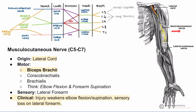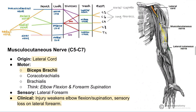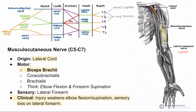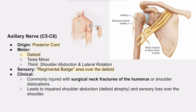First up, the musculocutaneous nerve. Remember its origin from the lateral cord. It innervates the muscles of the anterior compartment of the arm, most notably the biceps brachii. If you get a question about weakened elbow flexion or forearm supination, think musculocutaneous. The injury will also cause sensory loss on the lateral forearm. The axillary nerve is from the posterior cord and is a common injury site. Fractures of the surgical neck of the humerus or shoulder dislocations are classic causes. Look for impaired shoulder abduction due to deltoid atrophy, and remember the distinctive regimental badge sensory area over the shoulder.